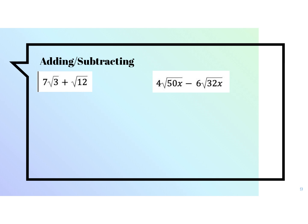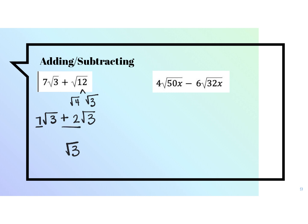The last thing you're going to do is adding and subtracting radicals. Here's the trick: the number underneath the radical has to be the same in order for you to put them together. So simplify your radicals whenever you possibly can. For the first example: I cannot simplify square root of 3, but I can simplify square root of 12. The first number from my perfect squares list is 4, and 4 times 3 gets back to 12. So I keep 7 square root of 3, and the square root of 4 gives me 2 square root of 3. Now that they're the same, it's like combining like terms — both are square root of 3, so you just do the operation with the numbers out front: 7 plus 2 gives me 9 square root of 3.